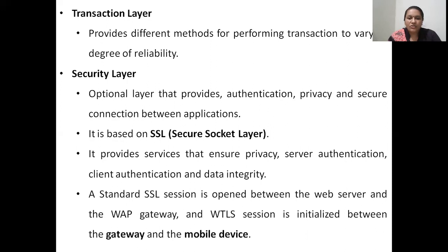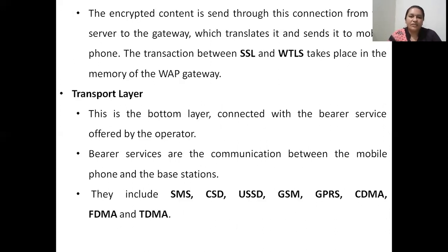A standard secure socket layer session will be opened between the web server and the WAP gateway, and a WTLS session — that is a wireless transaction layer security session — is initialized between the gateway and the mobile device. The encrypted content is sent through this connection from the server to the gateway. The gateway will translate it and send it to the mobile phone. The translation between the SSL and WTLS sessions takes place in the memory component of the WAP gateway itself. The WAP gateway sits between the client and server and ensures that the transaction between SSL and WTLS sessions occurs.